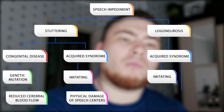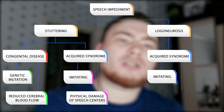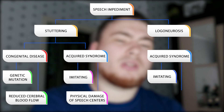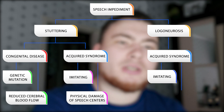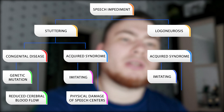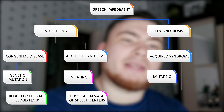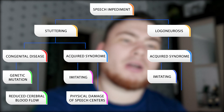Logoneurosis can also be acquired. Getting logoneurosis could happen because of copying another person with logoneurosis — if a person learns how to make spasms and blocks, the body memorizes it. This kind of logoneurosis is completely curable.